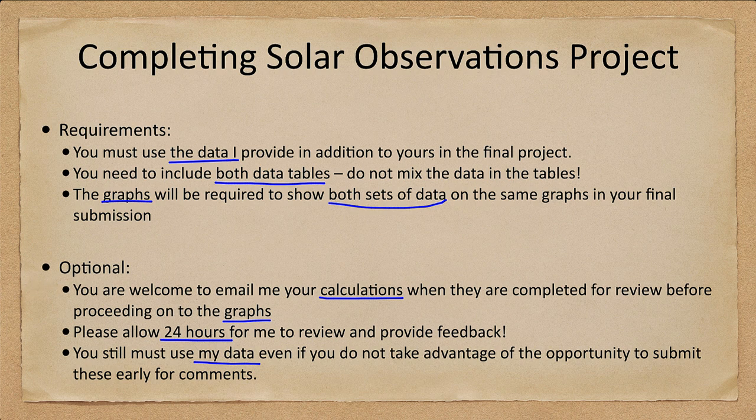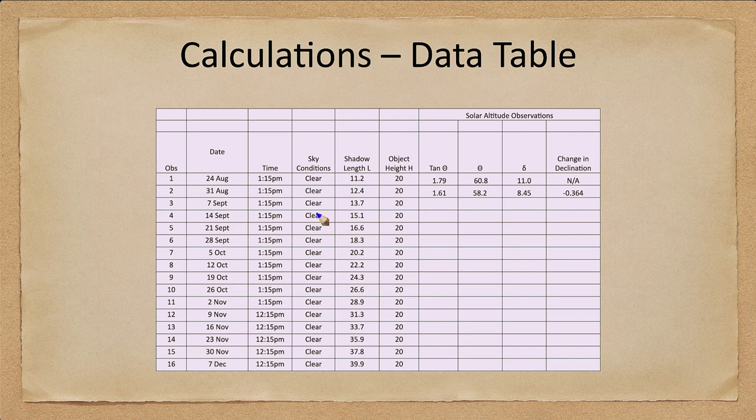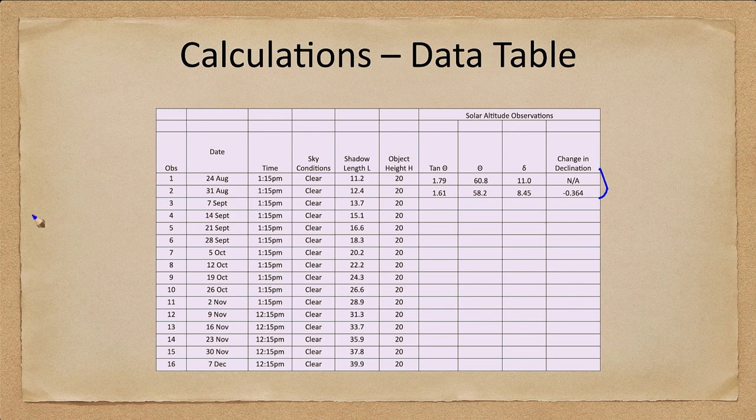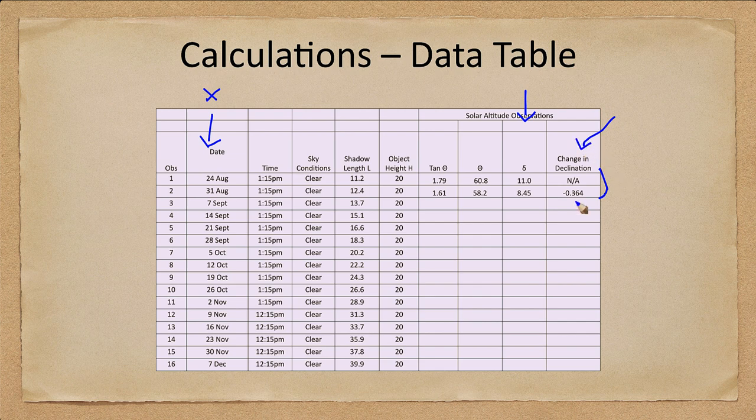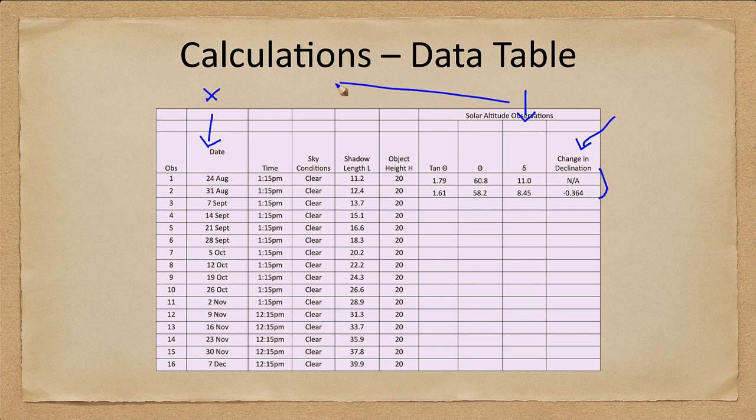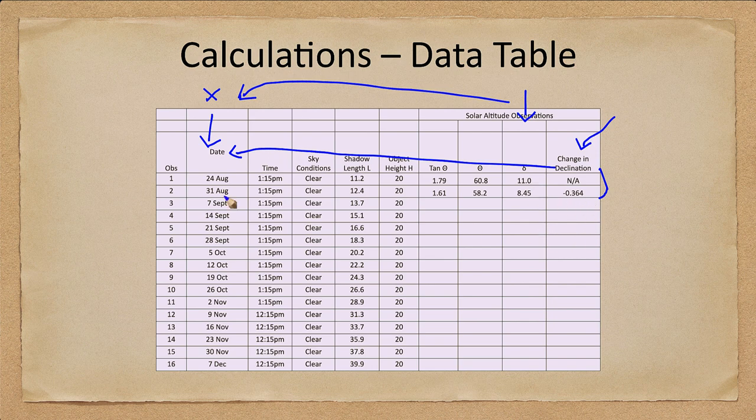Let's remind ourselves where we were. We were looking at the data table and we had completed a data table something like this. I had done the calculations for the first two parts here and we're going to go ahead and graph those. What we're graphing is the date here is going to be the x-axis. One graph will be the declination and the second graph will be the change in declination. So we're going to calculate declination versus the date, and in the second graph we will do the change in declination versus the date. So the date will always be on the x-axis.